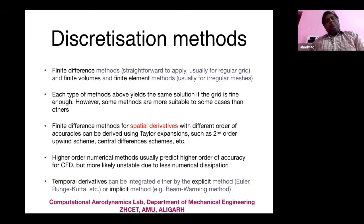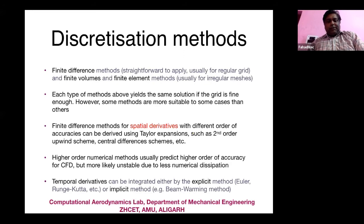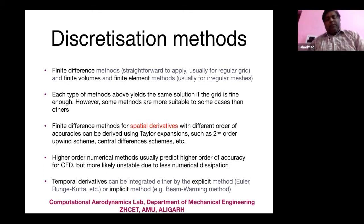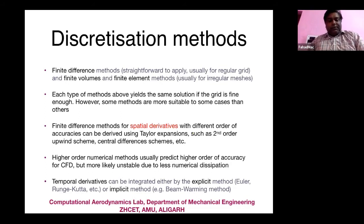Remember that each type of methodology gives the same solution — if the grid is fine enough, FDM, FVM, and FEM will lead to similar solutions, not identical, but similar. Suitability of the method must be checked. An important note: FVM on unstructured grids cannot go beyond second-order accuracy, whereas FDM can achieve higher-order accuracy. For temporal derivatives, there are explicit and implicit schemes — explicit schemes are sometimes conditionally stable, while fully implicit schemes are always unconditionally stable.